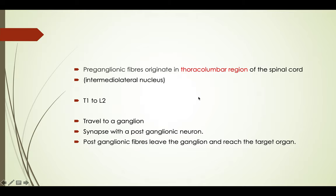The pre-ganglionic fibers for the sympathetic nervous system originate in the thoracolumbar region of the spinal cord. If you ever get a question about the region from where the pre-ganglionic sympathetic fibers come from, the answer is the intermediolateral nucleus of the spinal cord. The fibers originate from T1 to L2.